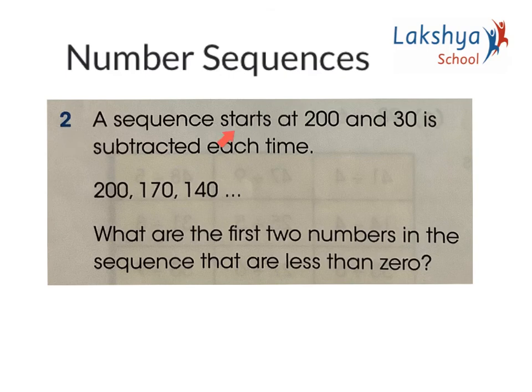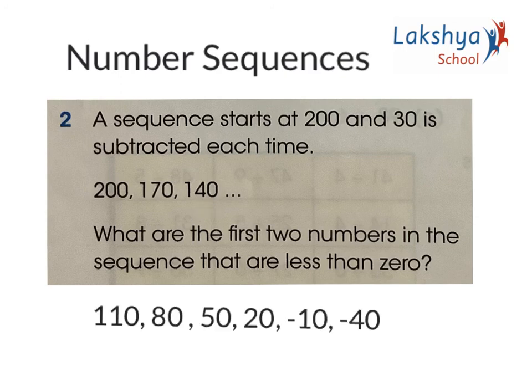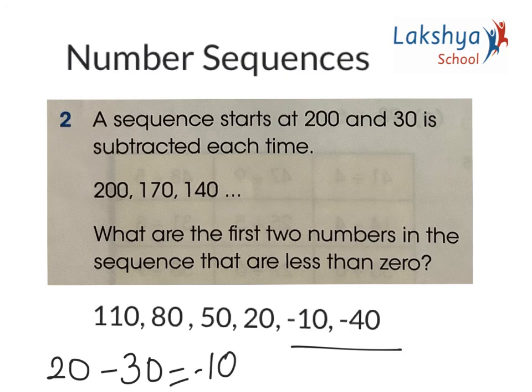Question 2: A sequence starts at 200 and 30 is subtracted each time. What are the first two numbers less than 0? Starting from 140: 140 minus 30 is 110, minus 30 is 80, minus 30 is 50, minus 30 is 20, minus 30 is minus 10, minus 30 is minus 40. The answer is minus 10 and minus 40. Remember that 20 take away 30 is 10, and we add a minus sign because the greater number has the negative sign.